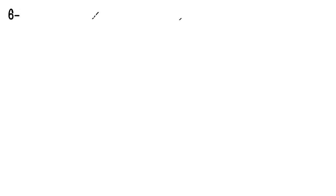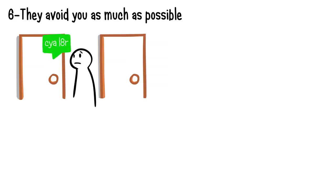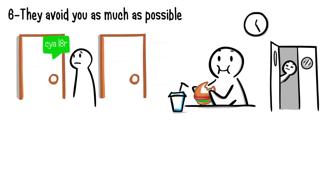Number six: They avoid you as much as possible. Do they live or work in close proximity to you, but limit communication to emails or text messages? When someone secretly dislikes you, they will do whatever it takes to have minimum contact with you.